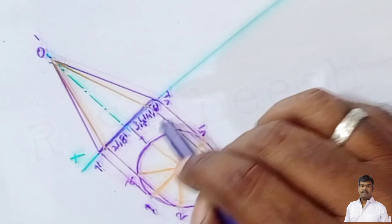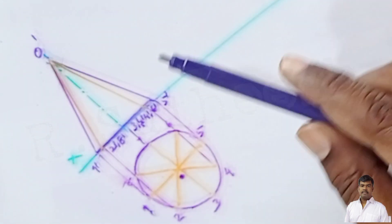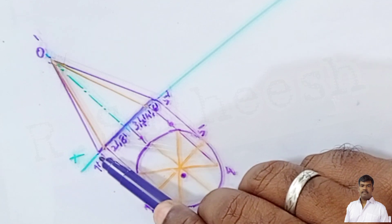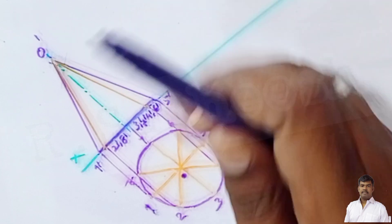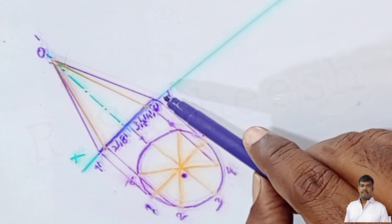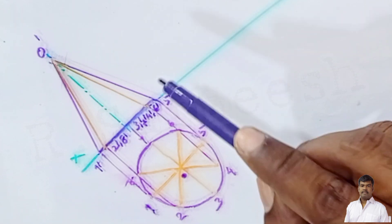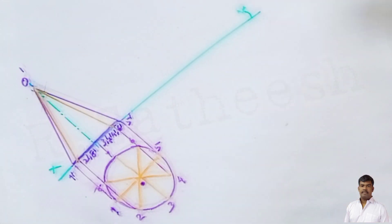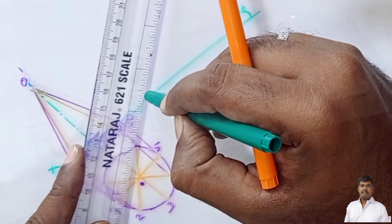Now, the top view is a circle divided into equal parts and the front view is a triangle with thick boundary only. While tilting the component, one point on the circumference of the base rests on HP. In the base, there are points 1 through 8. While tilting, point number 5 is the one point lying on the horizontal plane. The axis is inclined at 40 degrees to HP and parallel to VP.